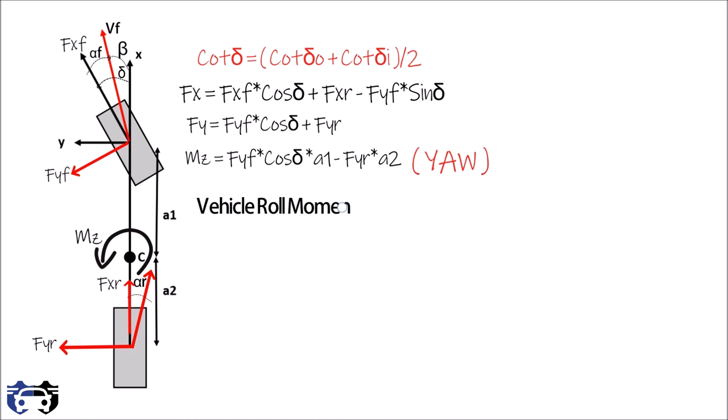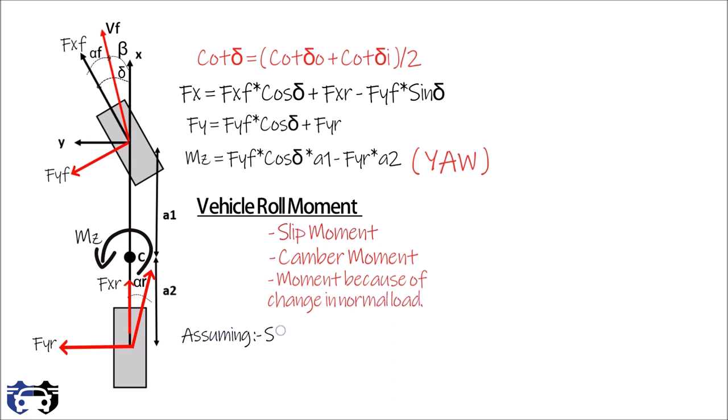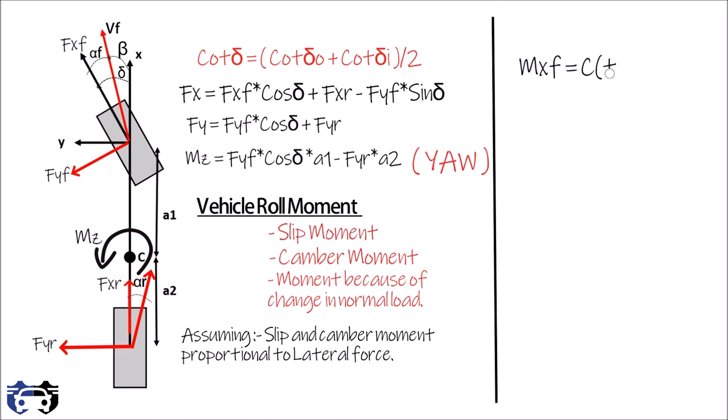The vehicle roll movement depends upon the movement due to slip, camber movement and movement due to change in normal loads on tyre. In vehicle roll dynamics it is assumed the slip and camber movement are proportional to lateral force. So the combined movement of slip and camber on front tyre is given by mxf equals to ctf multiply by fyf and on the rear tyre is given by mxr equals to ctr multiply by fyr where ctf and ctr are the overall torque coefficient.